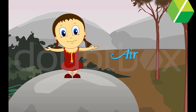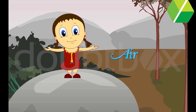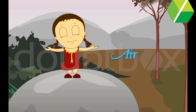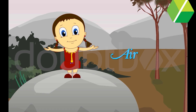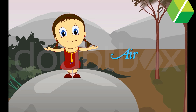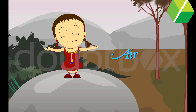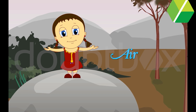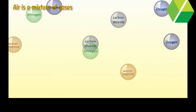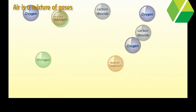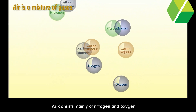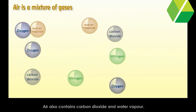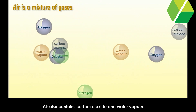Air is everywhere around us. We cannot see air, but we can feel it. In this chapter, we learn that air is a mixture of gases. Air consists mainly of nitrogen and oxygen.